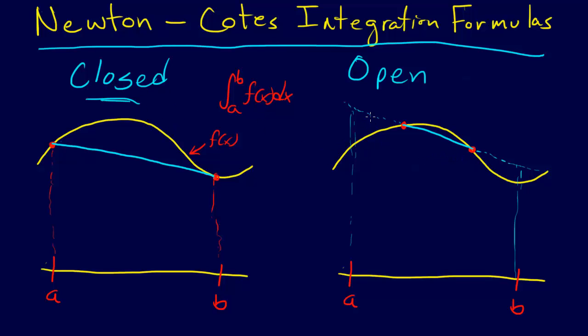Now, if we don't have the endpoints, then it's open integration. You can see a couple things here. Sometimes open integration can be more accurate. The problem with open integration, though, is just like extrapolation,